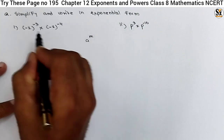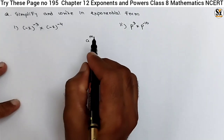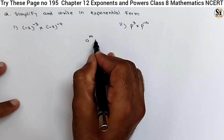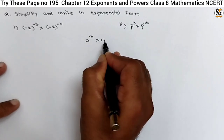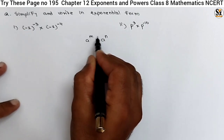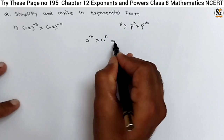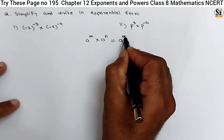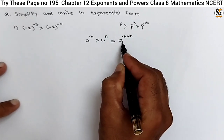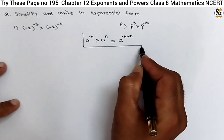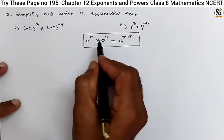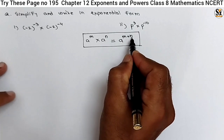To simplify, we need some rules. If a raised to m and a raised to n are two terms where the base is the same — base is a and exponents are different — then this can be expressed as a raised to m plus n. We are adding the exponents while keeping the base the same. We will use this rule to simplify the numbers, where a is a non-zero integer.